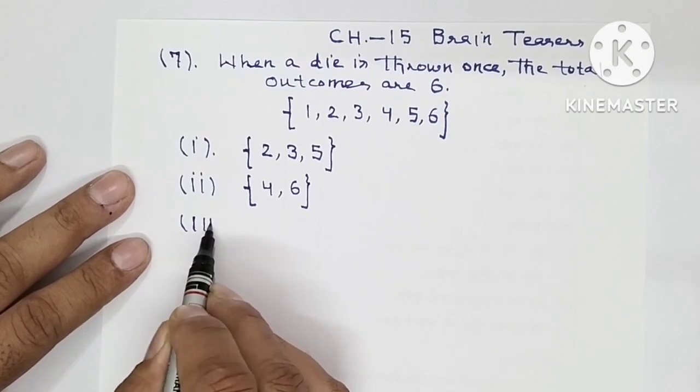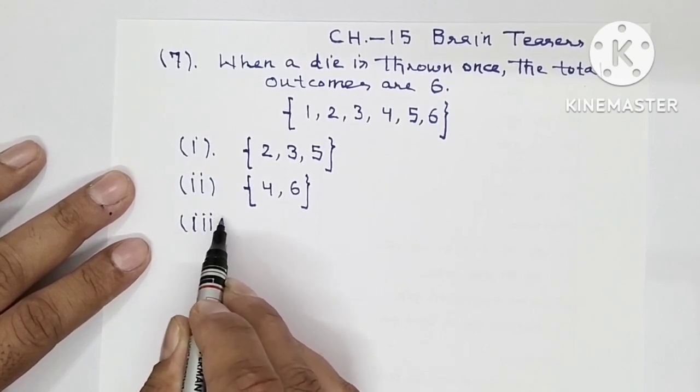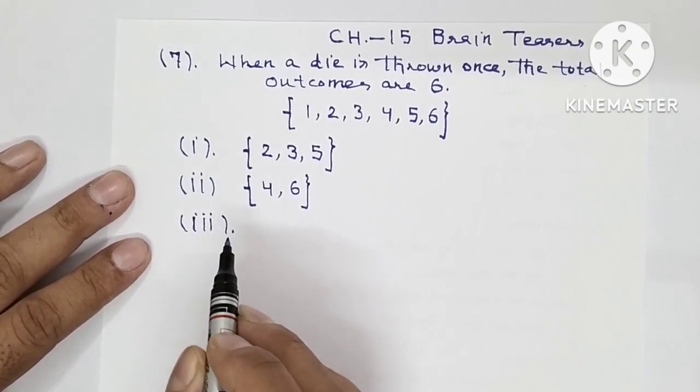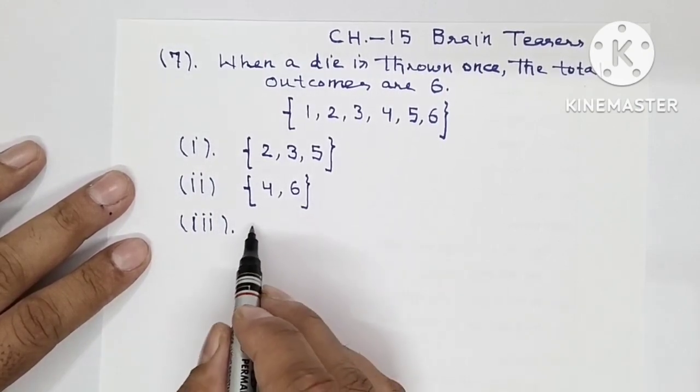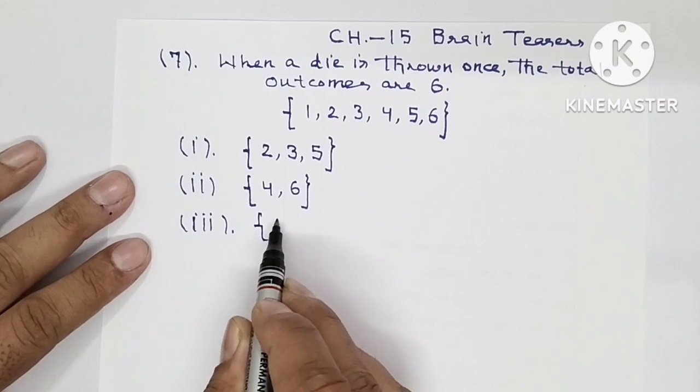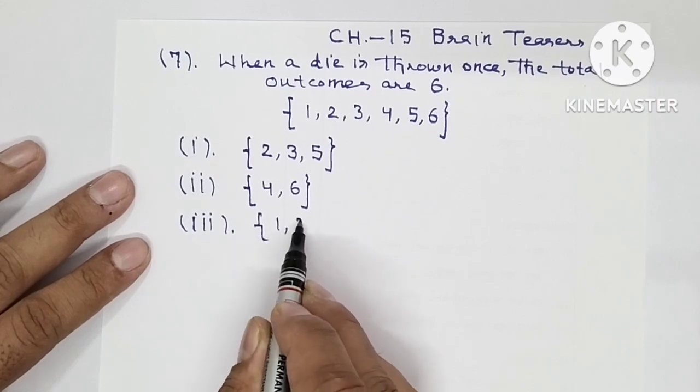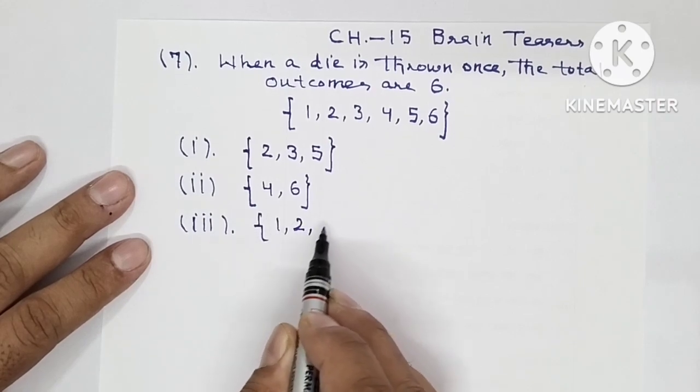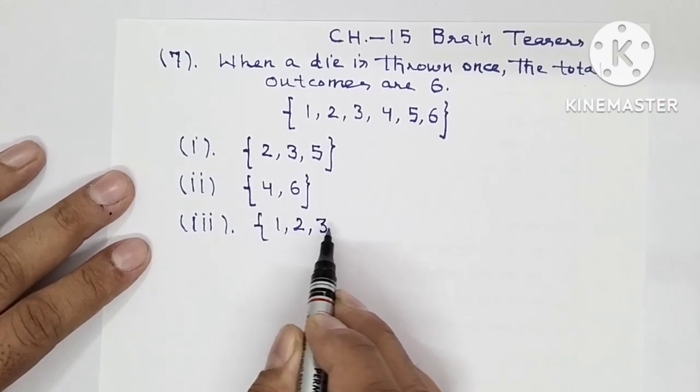Third part — a number less than 4. Numbers less than 4 would be 1, 2, and 3.